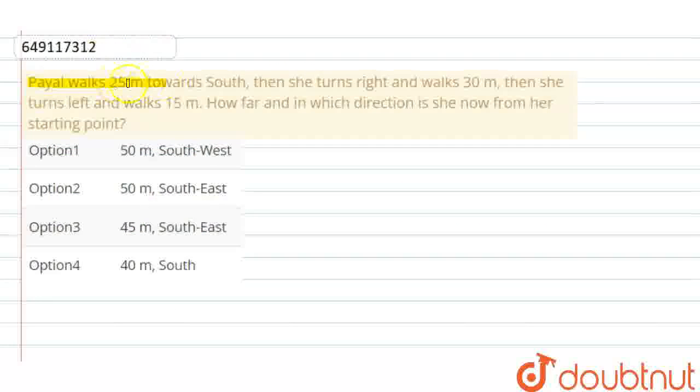Our question is: Pyle walks 25m towards south, then she turns right and walks 30m, then she turns left and walks 15m. How far and in which direction is she now from her starting point? We will find out the direction and distance. What will we do? We will make a direction chart. This will be our direction chart.